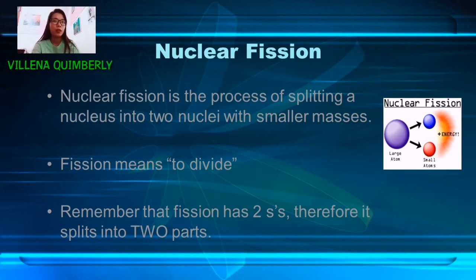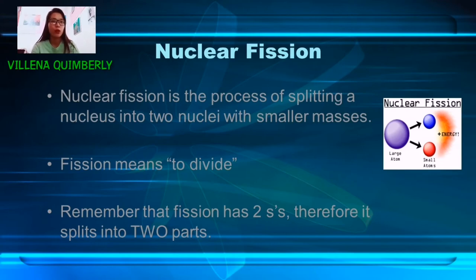Therefore, it's split into two parts. Nuclear fission is a nuclear reaction or a radioactive decay process in which the nucleus of an atom splits into two or more smaller, lighter nuclei.